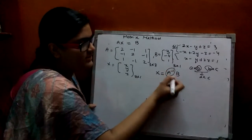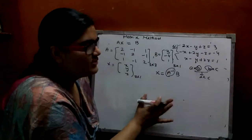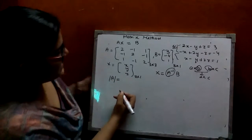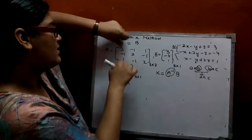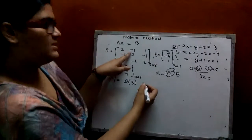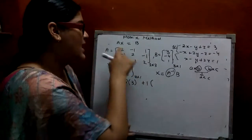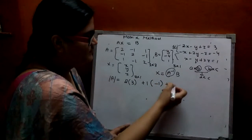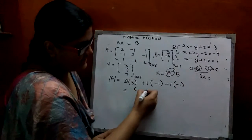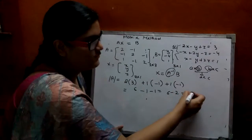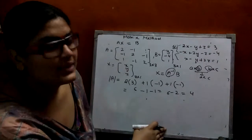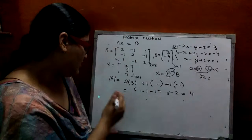Now you have to find out A inverse. First, find the A determinant. A determinant is 2 times (4 minus 1) that is 6, minus 1 times (minus 2 plus 1) that is minus 1, plus 1 times (1 minus 2) that is minus 1. So 6 minus 1 minus 1 equals 4. This is your A determinant. As this is not 0, you have a non-singular matrix and can proceed to find the inverse.